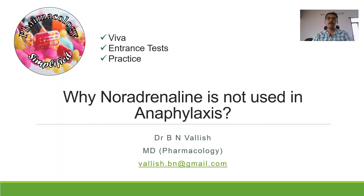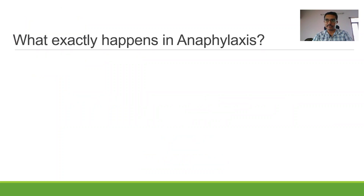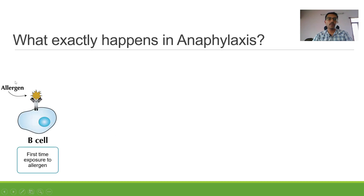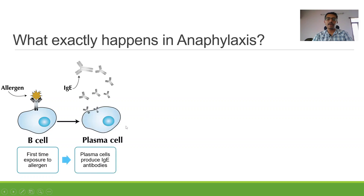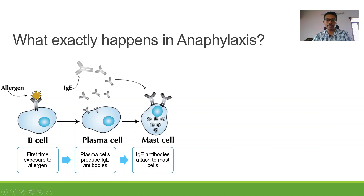First, we have to have an overview of anaphylaxis — what exactly happens in anaphylaxis. Anaphylaxis is a type 1 hypersensitivity reaction; it is mediated through IgE. The first thing that has to happen is exposure of the body to the allergen. The moment the first exposure of a particular allergen happens, B cells get converted into plasma cells and will start producing IgE. Large amounts of IgE are produced, and these IgE will sit on the mast cells.